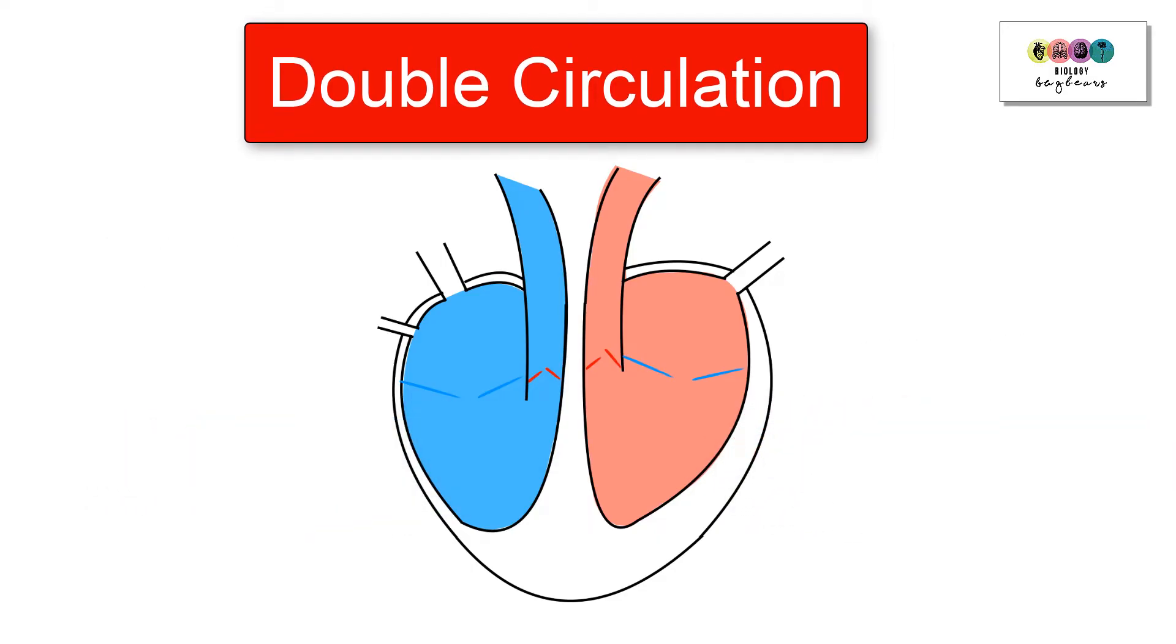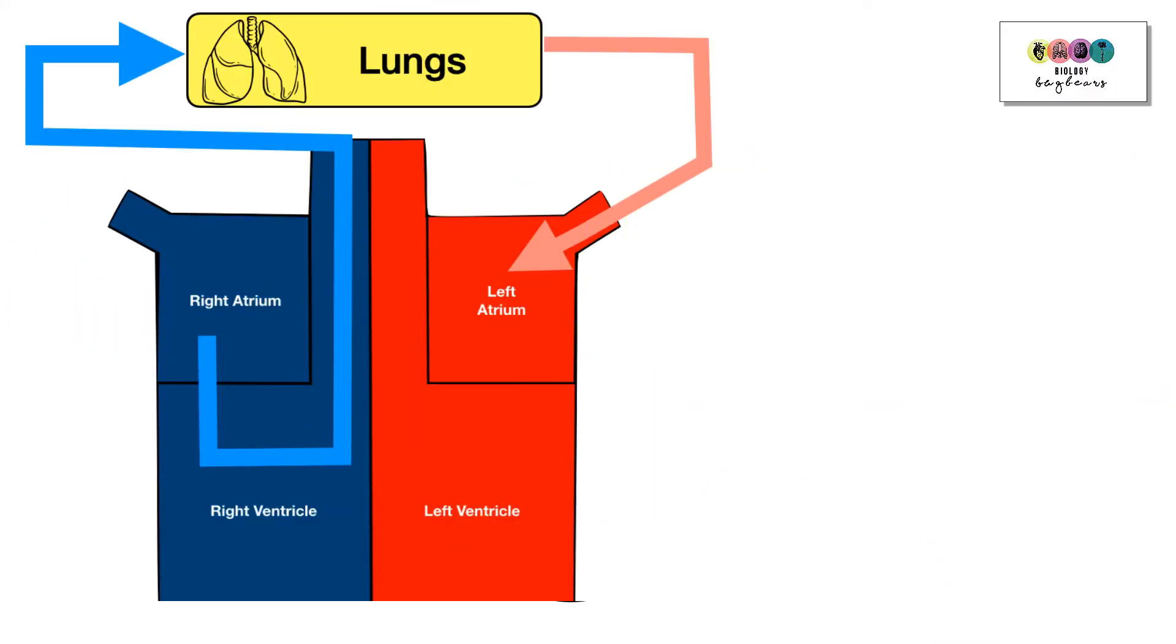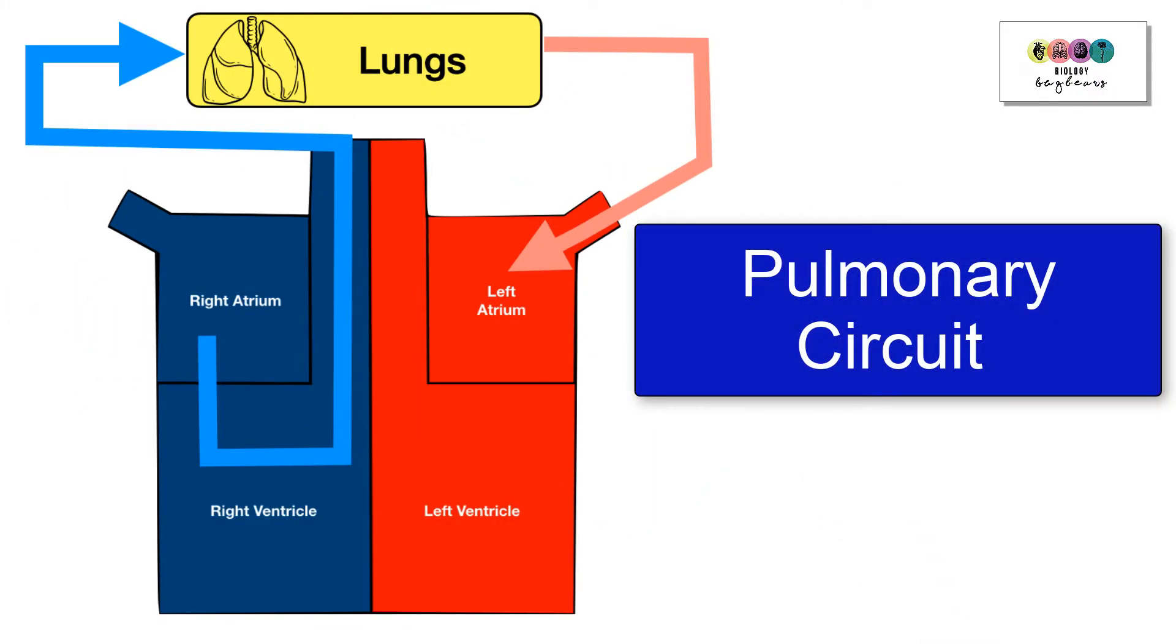This double circulation involves two circuits, the pulmonary circuit and the systemic circuit. So let's go through the pulmonary circuit where the blood is pumped from the heart to the lungs back to the heart again.